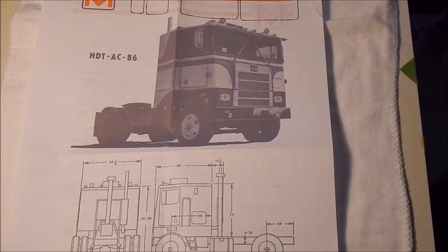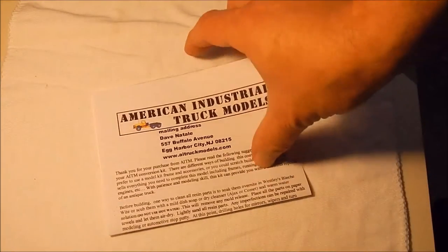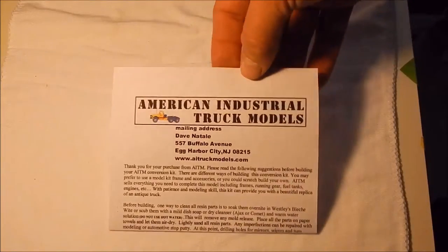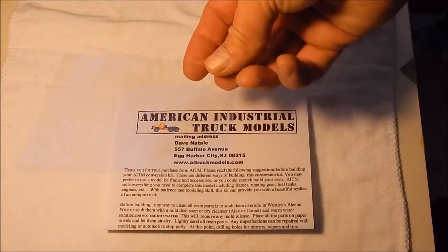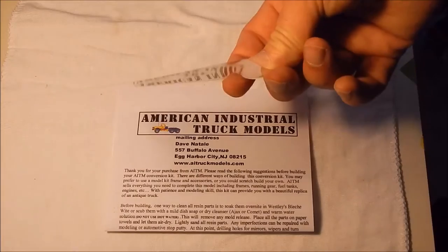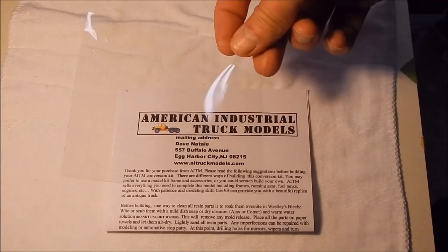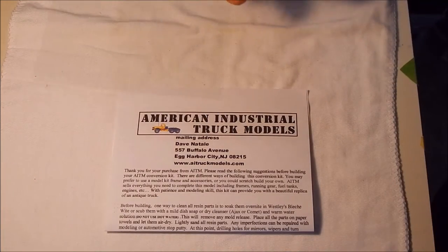Okay, so the first thing that came out of the box is this leaflet. The next thing that comes out of the box is another little leaflet. Inside the leaflet is a piece of clear acetate to cut to make the windows in the truck.